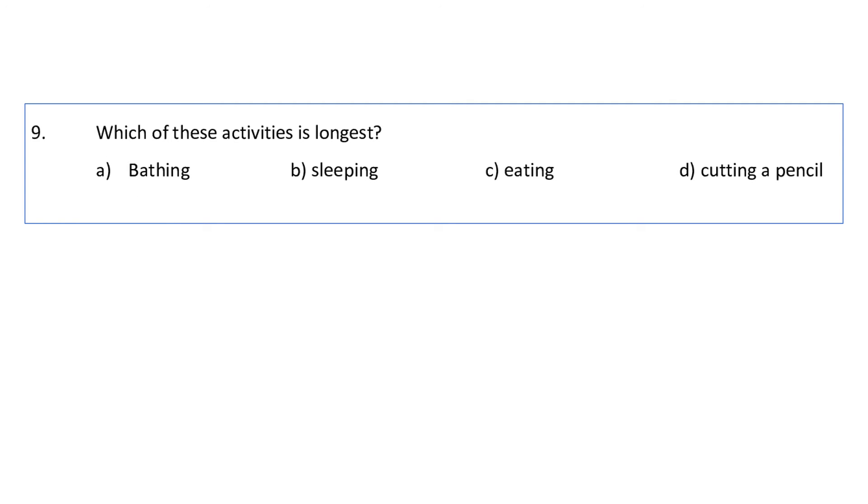Question 9: Which of these activities is longest? Which activities take longest time? Bathing normally takes 10 to 15 minutes or maximum 20 minutes. Sleeping - yes, we sleep for a lot of hours, 8 to 10 hours. Eating takes hardly 15 to 20 minutes and cutting a pencil also takes within minutes, within few seconds or 1 minute, maximum 2 minutes. So the longest activity is sleeping.